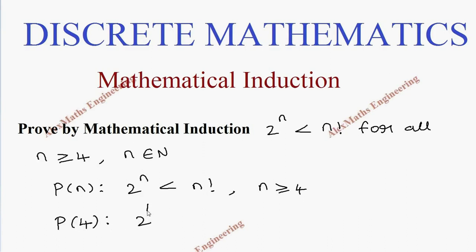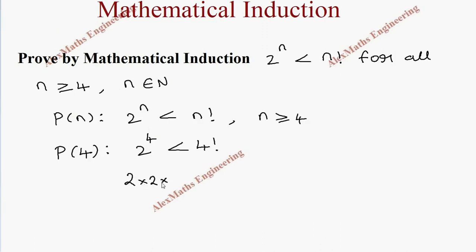So P(4) is 2^4 less than 4 factorial. 2^4 is 2×2×2×2, which is less than 4 factorial, which is 4×3×2×1. This is 16, which is less than 24. Therefore we can say P(4) is true.